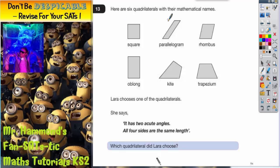Question 13. Here are six quadrilaterals with their mathematical names: square, parallelogram, rhombus, oblong (better word for oblong is rectangle), kite, and trapezium.